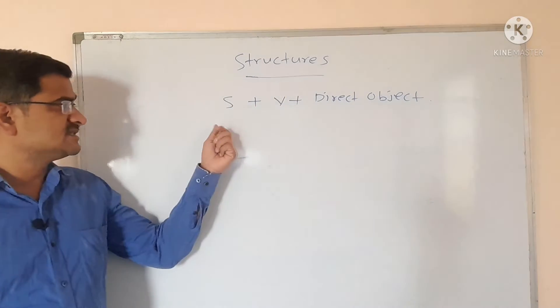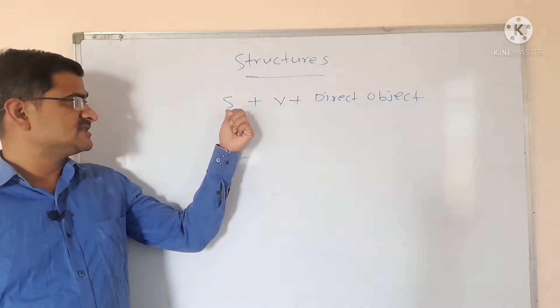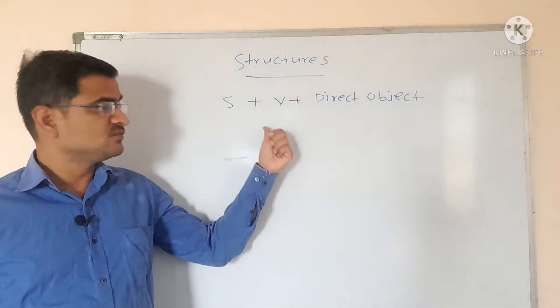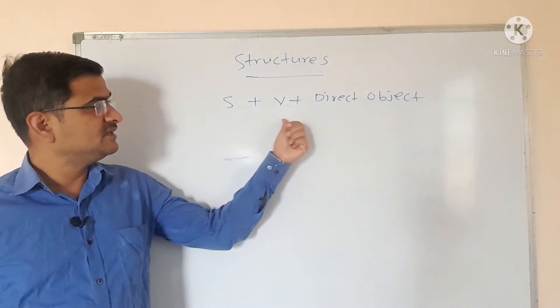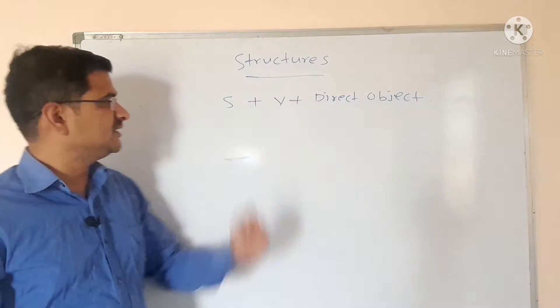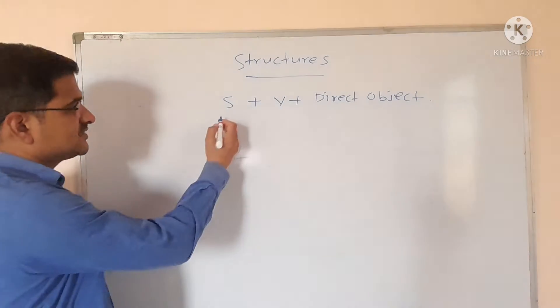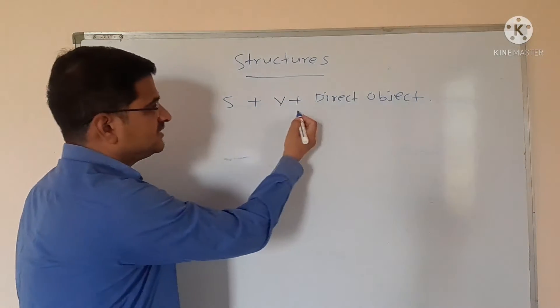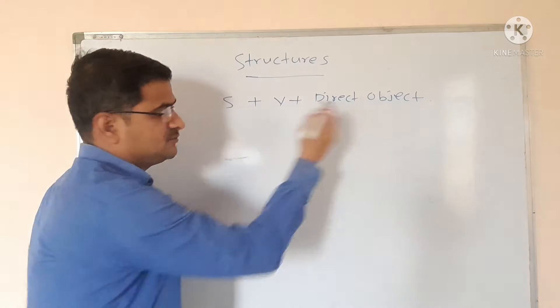S stands for subject, V stands for verb, and then we have the direct object. So the full structure is: subject plus verb plus direct object.